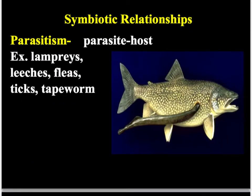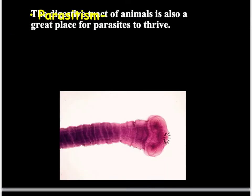Here's another example of parasitism. There's a fish, and this thing stuck onto it that looks like an eel is called a lamprey — kind of like a leech. It bites into the fish's flesh and sucks its blood, so the lamprey benefits by getting food while the fish may get sick or die. Also, tapeworms are parasites of humans — they get into our digestive system, bite into our stomach or intestines, and eat the food we've digested. We get sick, and that's how we're harmed.